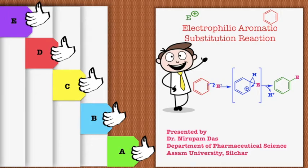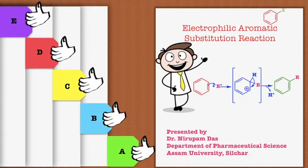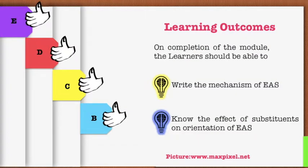I warmly welcome you once again to this series of modules on aromatic compounds. Today the topic of discussion will be electrophilic aromatic substitution reaction. On completion of the module, the learner should be able to draw the mechanism of electrophilic aromatic substitution reaction and know the effect of substituents on orientation.